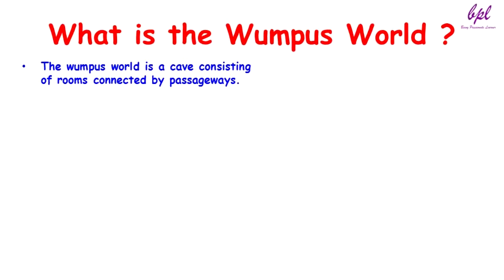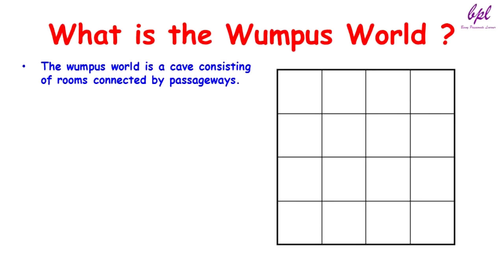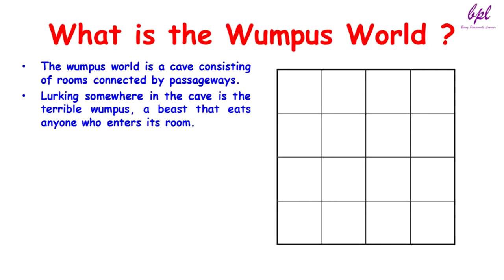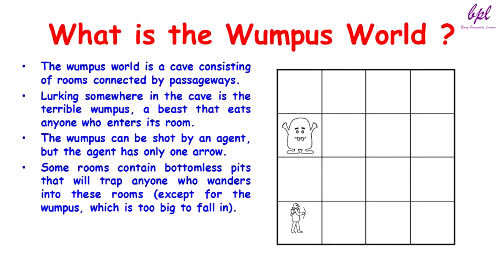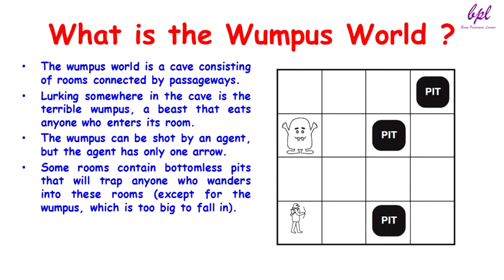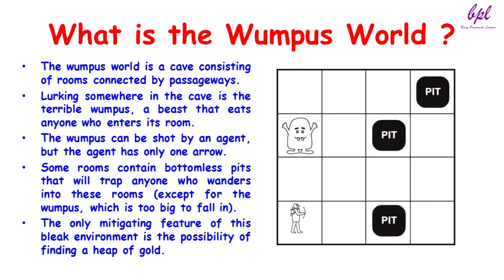The Wumpus World is a cave consisting of rooms connected by passageways. Consider this is a cave consisting of 16 rooms connected by passageways. Lurking somewhere in the cave is the terrible Wumpus, a beast that eats anyone who enters its room. The Wumpus can be shot by an agent, but the agent has only one arrow. Some rooms contain bottomless pits that will trap anyone who wanders into these rooms, except for the Wumpus which is too big to fall in. There are 3 different rooms having pits. The only mitigating feature of this environment is the possibility of finding a heap of gold.